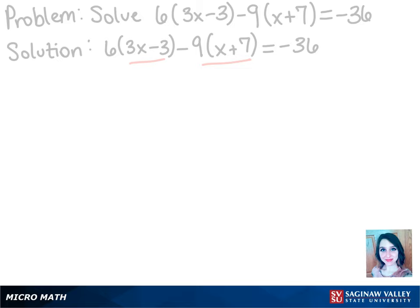We can, however, distribute, so we have 6 that we can distribute to both terms in these parentheses. Doing that will give us 18x minus 18, and we can also do the same thing with the negative 9 to both terms in these parentheses, which will give us negative 9x minus 63 equals negative 36.